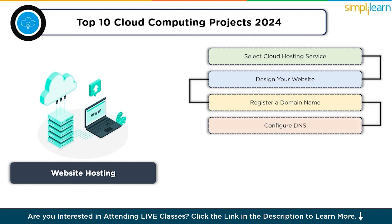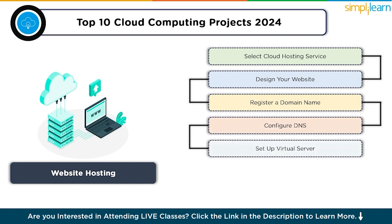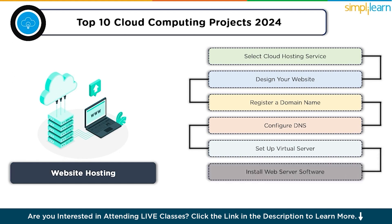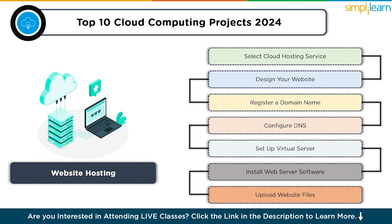Configure the DNS settings to point to your cloud hosting server's IP address. Then set up a virtual server instance on your chosen cloud platform — for example, AWS EC2, Azure VM, or Google Compute Engine. Next, install and configure web server software like Apache on your virtual server.